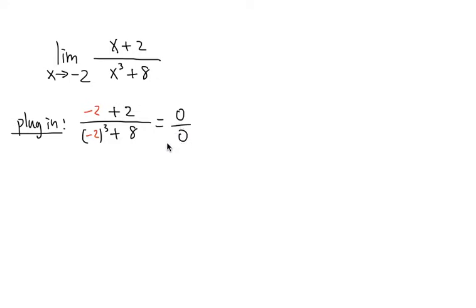And to do more work in this situation, on the top, there's nothing much we can do. It's just x plus 2. But on the denominator, we notice we have x to the third power plus 8. And 8 is like 2 to the third power. We can factor this out. This is the sum of 2 cubes.